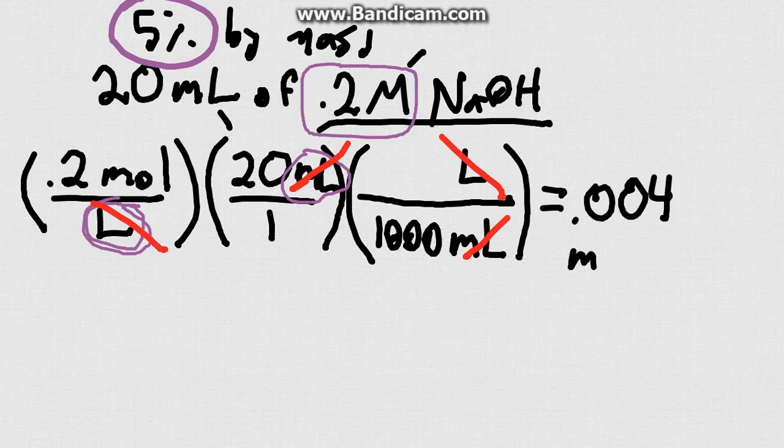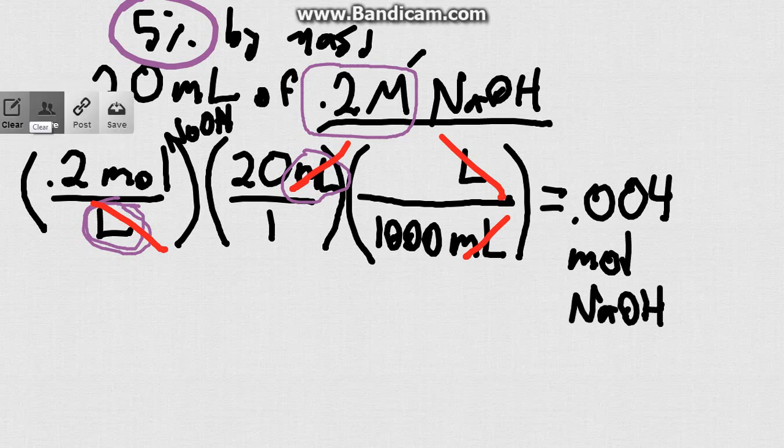And what are these moles of? Well, we started off, I should have written it right here in this section, but this is sodium hydroxide. So we end up with 0.004 moles of sodium hydroxide. Okay, so that is how many moles we have of this substance.